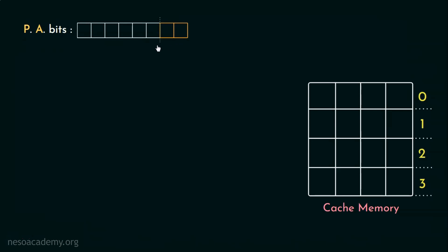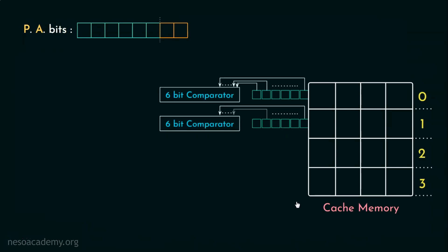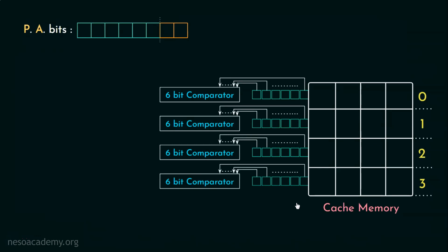Therefore, the remaining six bits are going to be used as block numbers. Also now we know that in fully associative mapping, the block number bits are used as tag bits. So, all the four lines will be connected to a six-bit comparator each, to which the tag bits of the physical address will be fed in parallel.